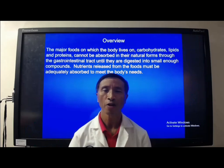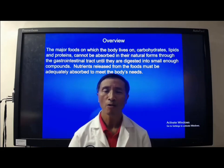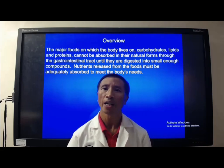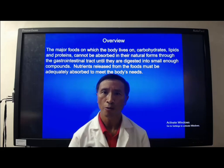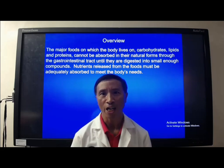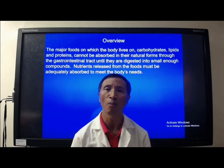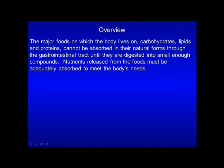This is the fourth lecture for GI physiology. Macronutrients, including carbohydrates, lipids, and proteins, cannot be absorbed in their natural forms through the gastrointestinal tract until they are digested into small enough compounds. Nutrients released from the food must be adequately absorbed to meet the body's needs.